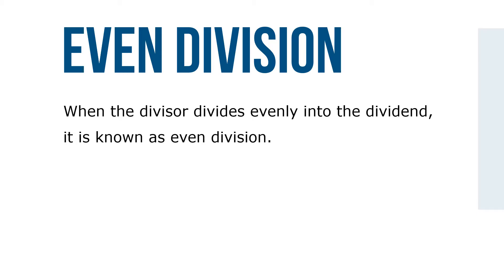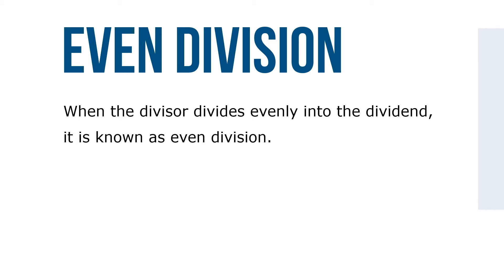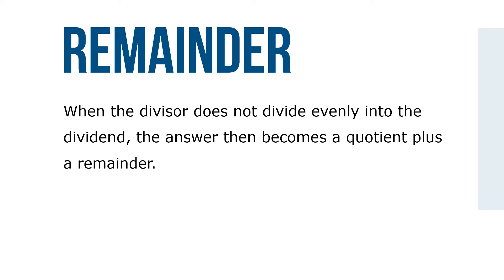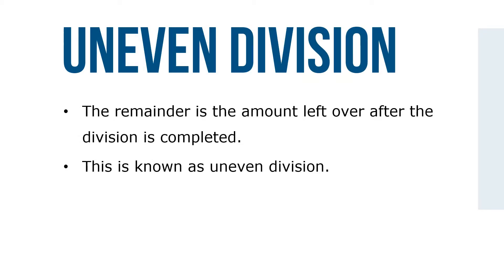When the divisor divides evenly into the dividend, it is known as even division. When the divisor does not divide evenly into the dividend, the answer then becomes a quotient plus a remainder. The remainder is the amount left over after the division is completed. This is known as uneven division.